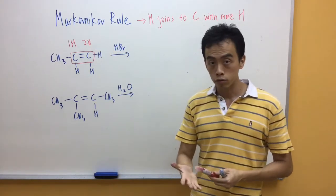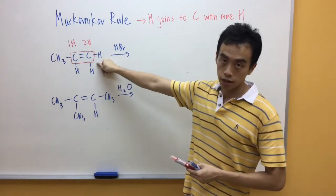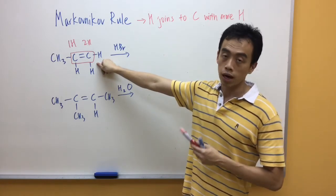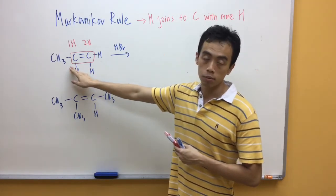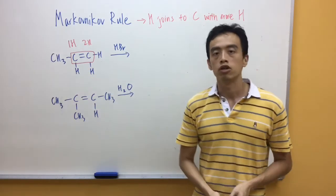So according to the Markovnikov rule, carbon on the right has more hydrogen, so hydrogen will join to the carbon on the right. And Br will be attached to the carbon on the left to give us the major product.